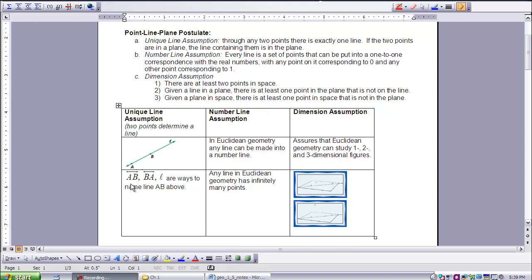The other part is the number line assumption from Part B. Any line in Euclidean geometry can be made into a number line. The main point here is that any line in Euclidean geometry has infinitely many points. Between any two points in Euclidean geometry, there's always one more point. There's infinitely many points.